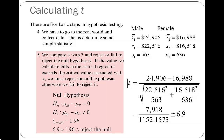Step five: we make our decision. I compare the calculated value of 6.9 to the critical value of 1.96 that delimits chance. Because 6.9 is greater than 1.96, I reject the null hypothesis and conclude there is a statistically significant difference in average income between men and women — men on average make more money than women. If I've made a Type I error, the probability of that is 0.05, determined by the alpha value I selected in step three.